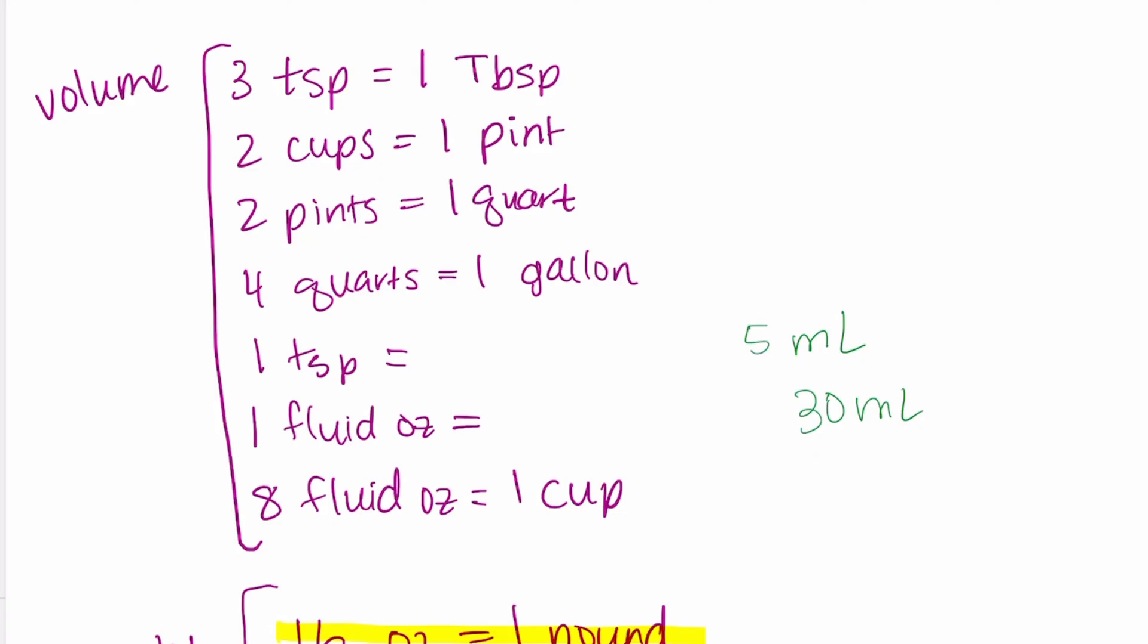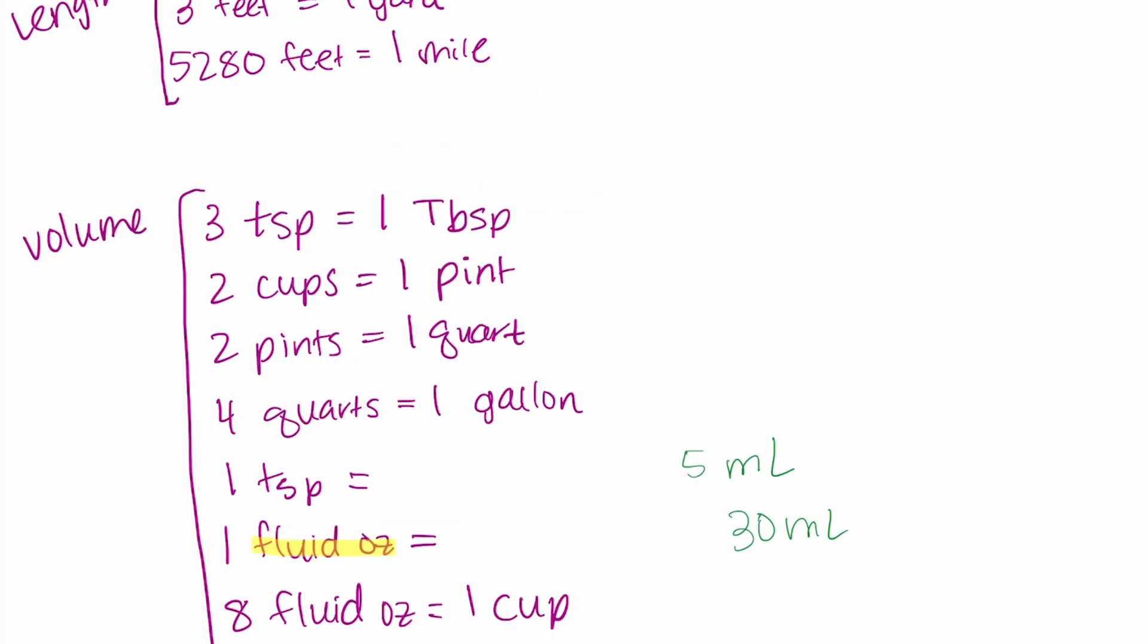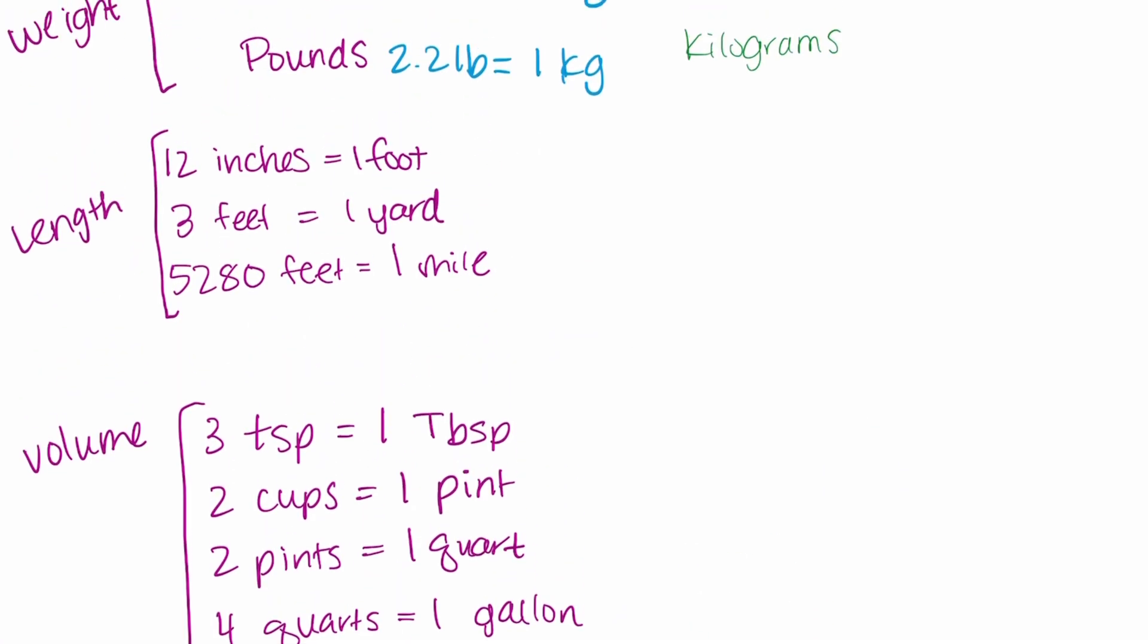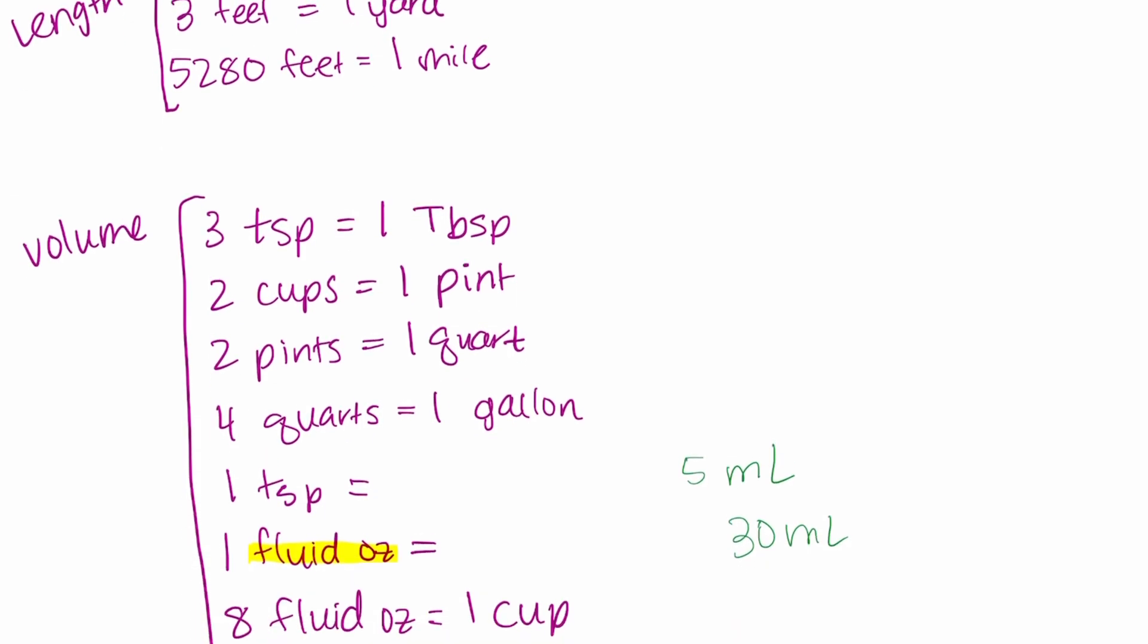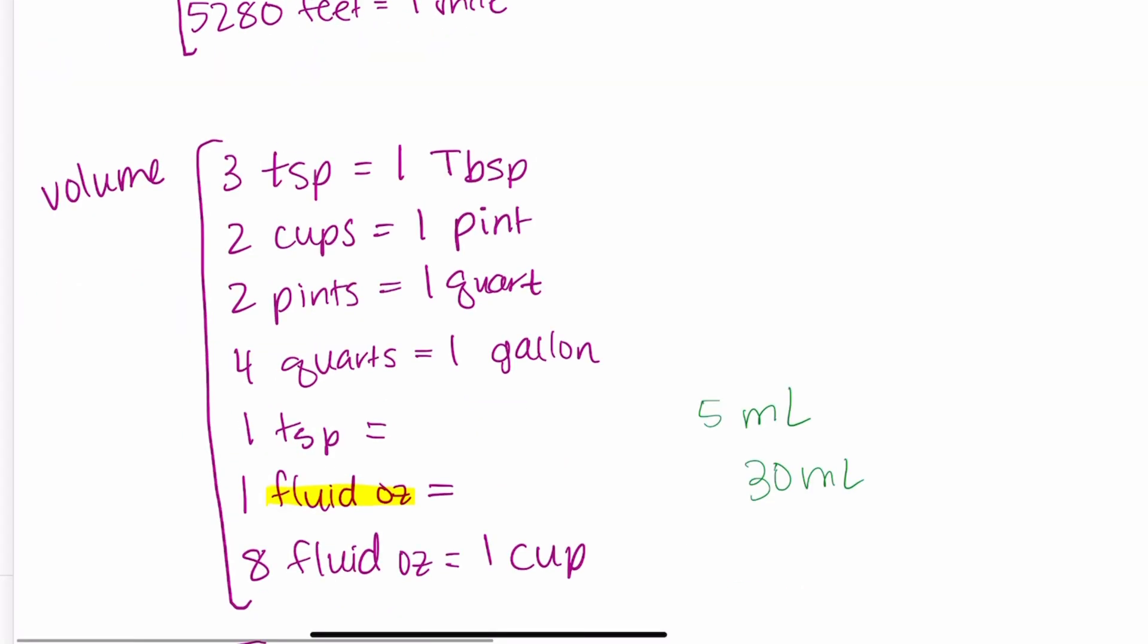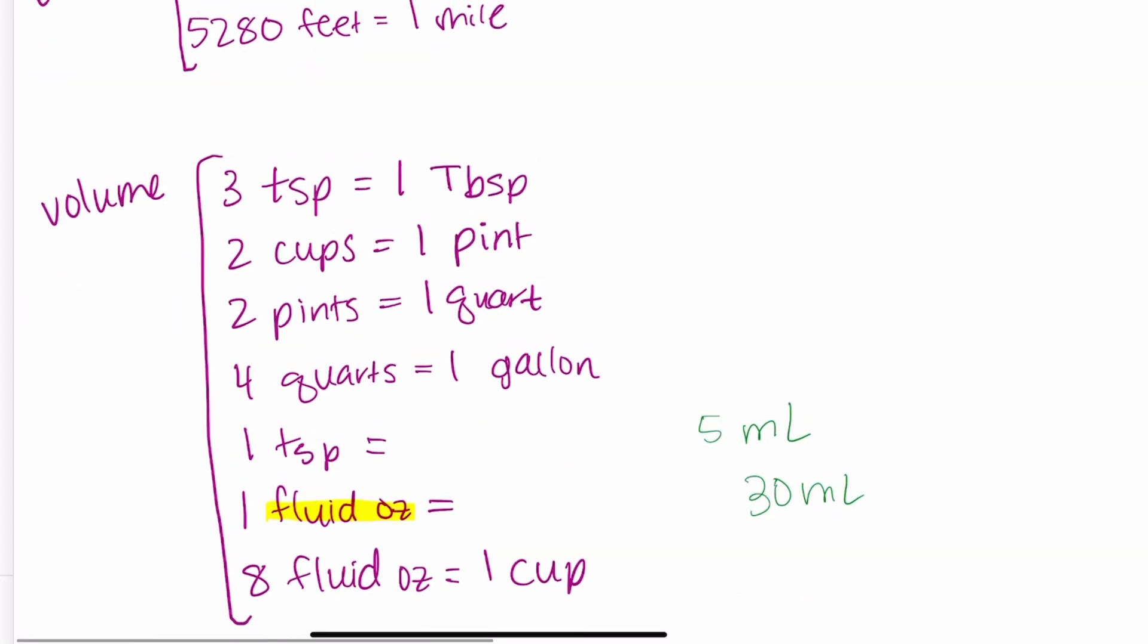Now it's important to note here that fluid ounces are different from ounces when you're measuring weight. These are two different types of measurement. But the fluid ounce, as I just said, one fluid ounce is equal to 30 milliliters. And then eight fluid ounces is equal to one cup.